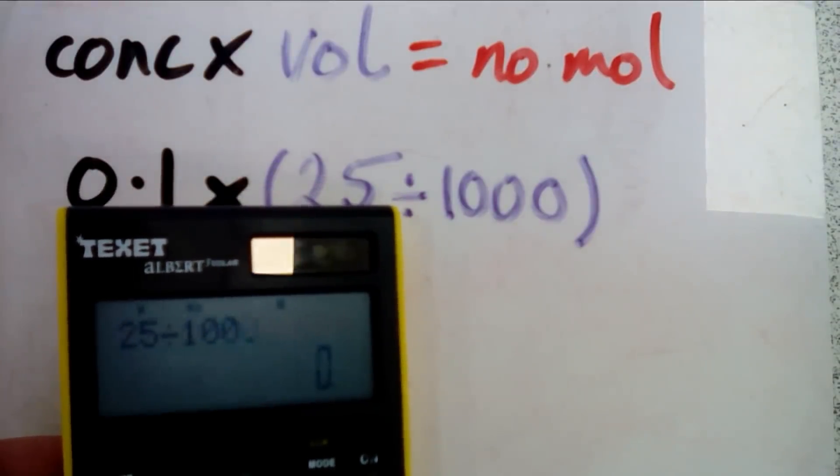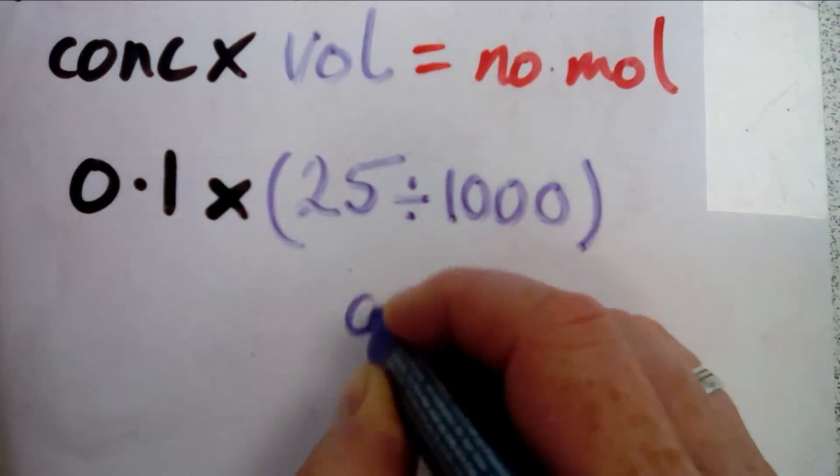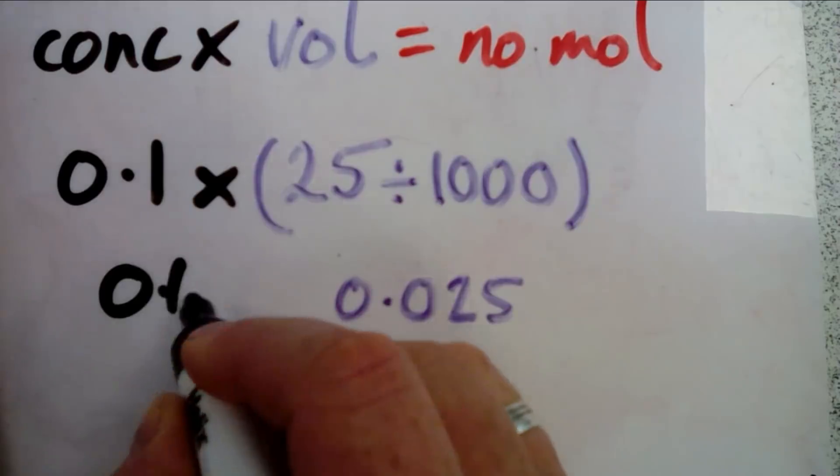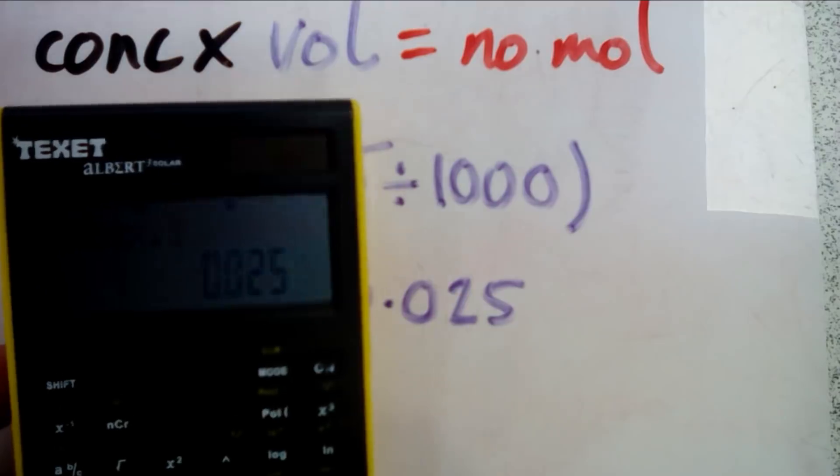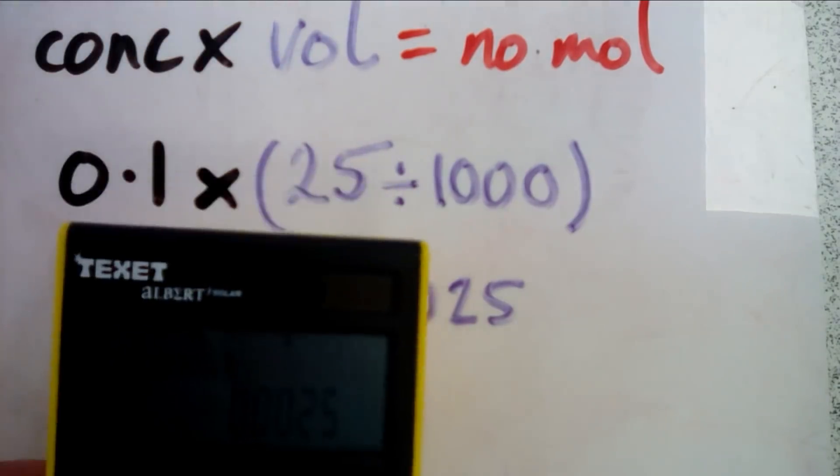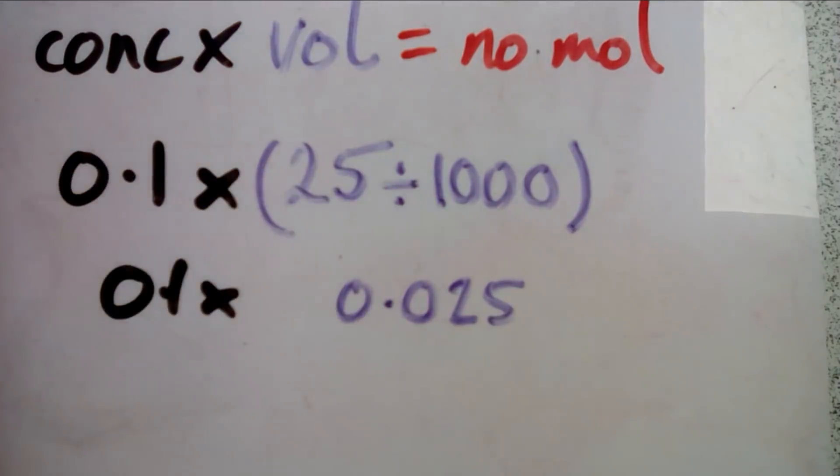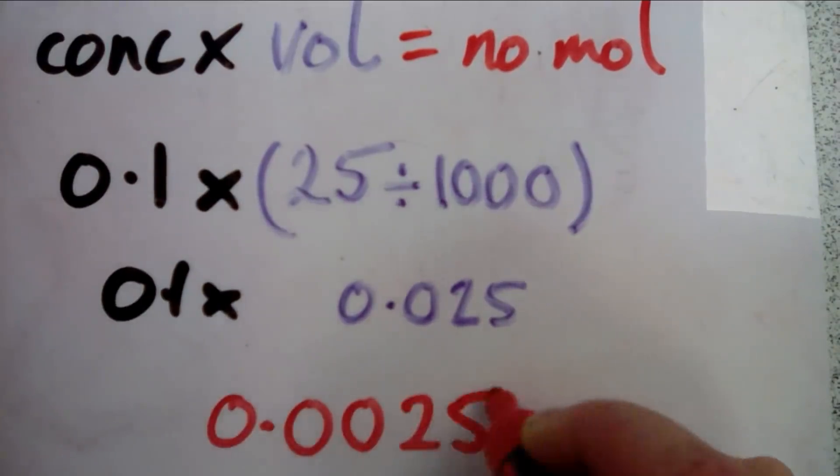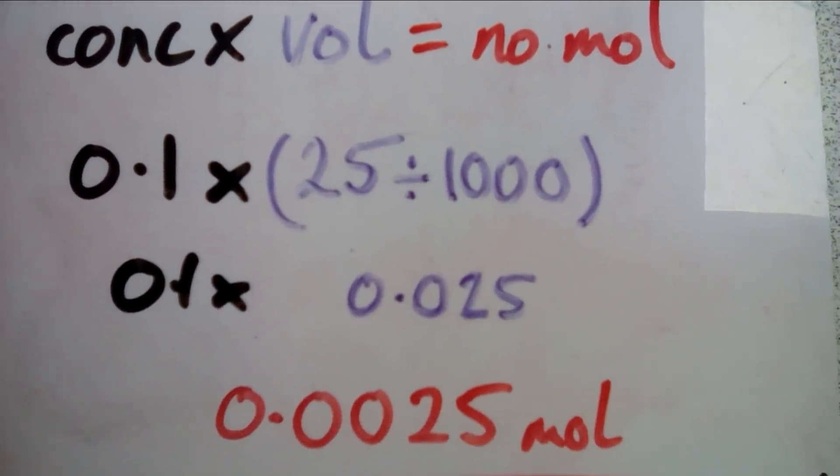Using our trusty calculator, we do 25 divided by 1000 and that gives us 0.025. That has to be multiplied by our concentration of 0.1, which gives us an answer of 0.0025. There we have the number of moles in our sodium hydroxide.